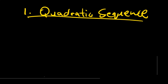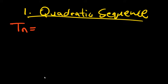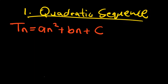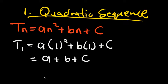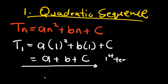The quadratic sequence has a general term of an² + bn + c. To find the first term, we substitute n = 1, giving us a(1²) + b(1) + c, which simplifies to a + b + c. So this is our first term of the quadratic sequence.